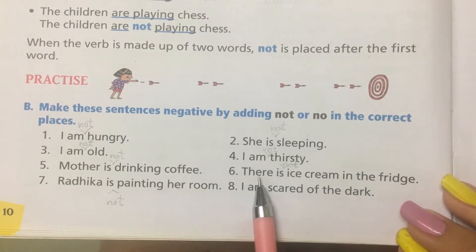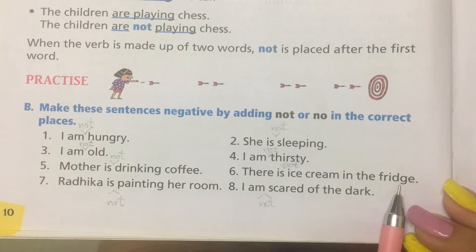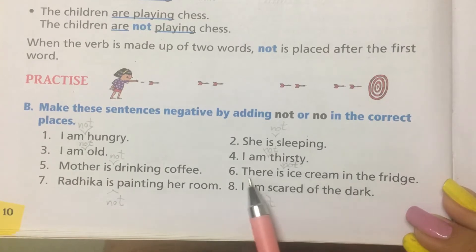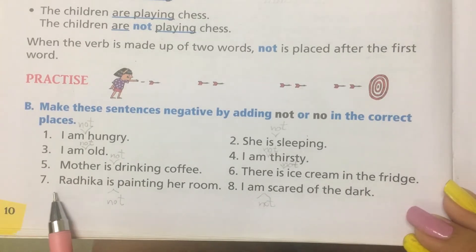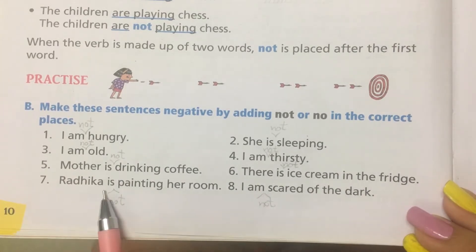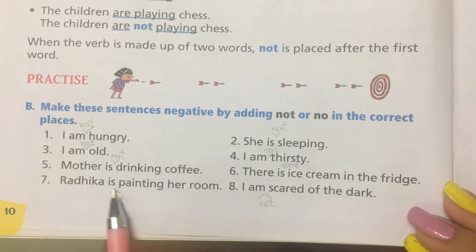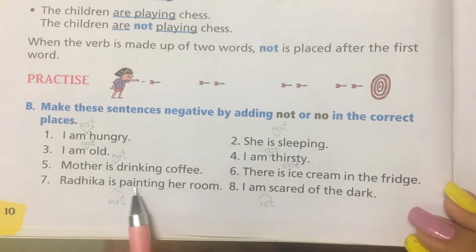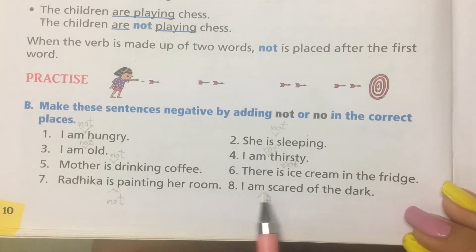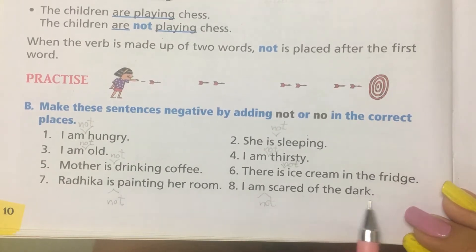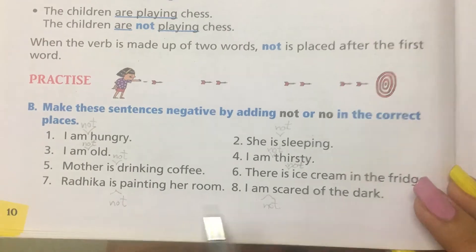Number six: There is ice cream in the fridge — There is no ice cream in the fridge. Number seven: Radhika is painting her room — Radhika is not painting her room. Number eight: I am scared of the dark — I am not scared of the dark.